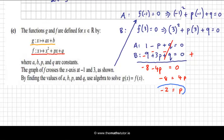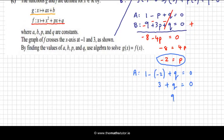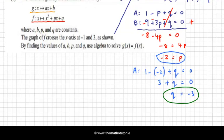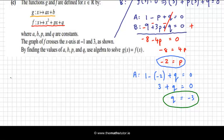Now we've established the value of p, we need to find q. I simply sub that value of p into one of my equations. I'll substitute into A: 1 - (-2) + q = 0. 1 - (-2) is 3 + q = 0, so q = -3. So I found p and q. I can now write out the function f(x) as x² - 2x - 3.